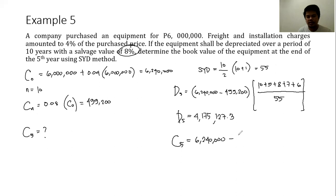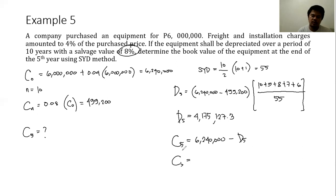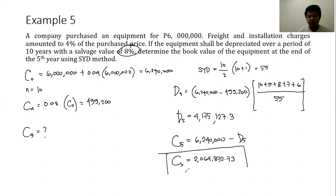The book value C5 equals the first cost minus the total accumulated depreciation. After calculating, the book value of the equipment after five years using the SYD method is approximately 2,064,872.70 pesos. This is the value of the equipment after five years under the SYD method.